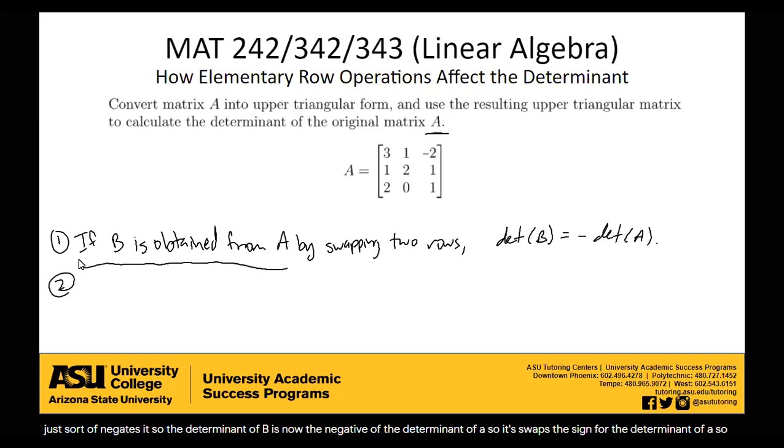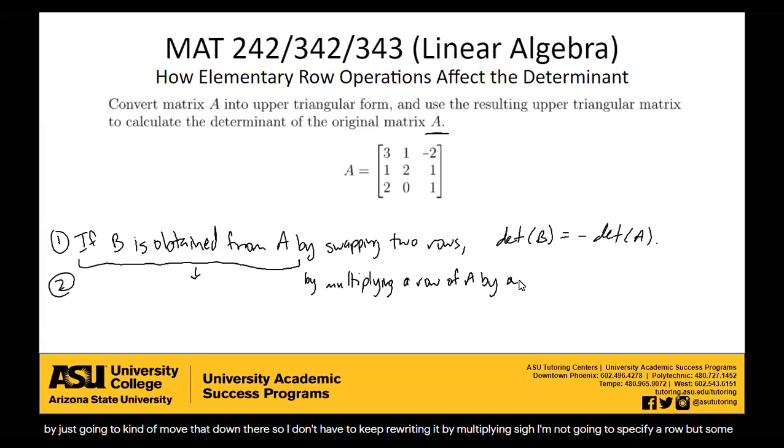OK, what other row operations do we know? So if B is obtained from A by multiplying rho, I'm not going to specify a rho, but some rho, a rho of A by some scalar, which I will call alpha. So say you multiply rho 13 of matrix A by some scalar alpha. How is that going to affect the determinant? Well, the determinant of B is going to be alpha times the determinant of A. So if you multiply the determinant by some scalar alpha, then the determinant gets multiplied by that scalar alpha. So if I take my matrix and I multiply rho 2 by 7, then I have to multiply the determinant of my matrix by 7.